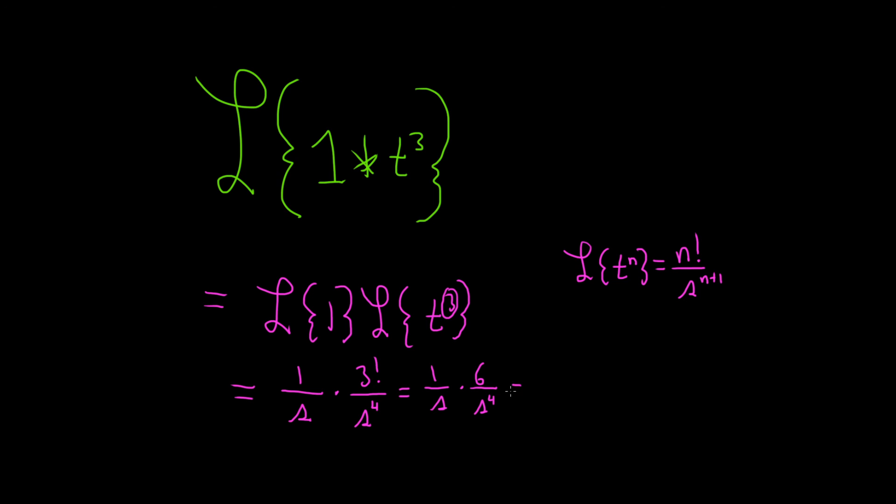The last thing to do is just multiply. 1 times 6 is 6, and s times s to the 4th is s to the 5th, because you add the exponents. And that would be the Laplace transform of the convolution. I hope this video has been helpful.